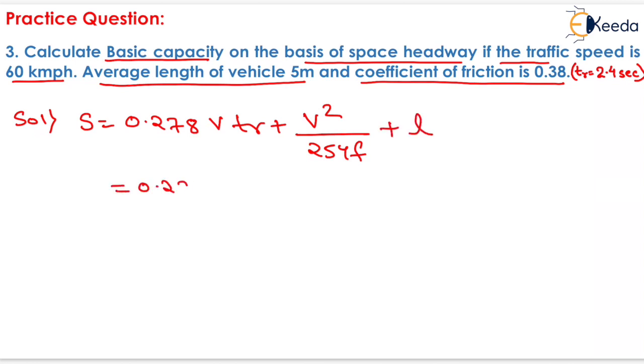Now the speed of vehicle is given as 60 km per hour, so we will put 60 here, and the reaction time is given as 2.4 seconds, so we will put 2.4 here.